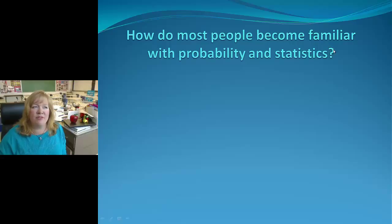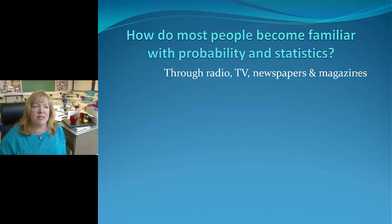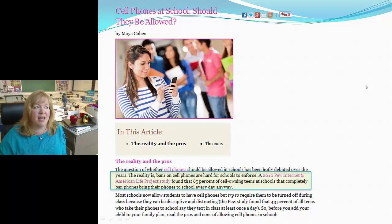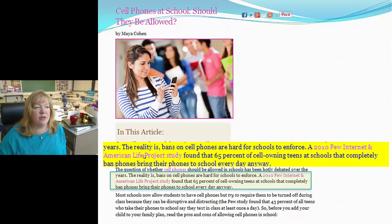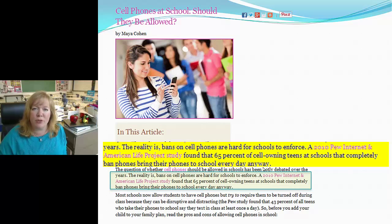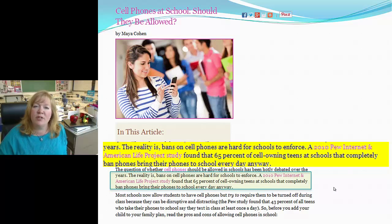How do most people become familiar with probability and statistics? We've already examined some of those — radio, TV, newspaper, magazines, the internet. They quote statistics all the time. Here's an example: cell phones — should they be allowed? A Pew Research study showed that 65% of cell-owning teens at schools that completely ban phones bring them to school anyway. This is the kind of thing we see in articles — they do a study or survey and monitor the responses.